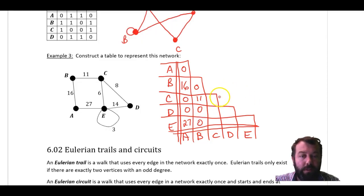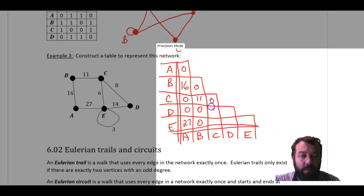Moving along to C, there's no loop at C. We've already covered B. So you can see I'm only interested in the loop at C, C to D, and C to E. So C to D is 8. C to E is 6. That's a 0, 8, 6.